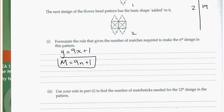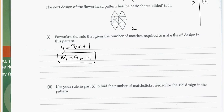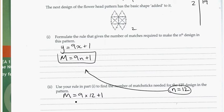And carrying on, use your rule to find the number of matchsticks needed for the twelfth design. So that's N equals 12, N being the design number. We can use substitution. M is equal to 9 times 12 plus 1. We put the value of N into the equation. This would give us 9 times 12 plus 1, so that's 108 plus 1 gives us 109. So 109 matchsticks.